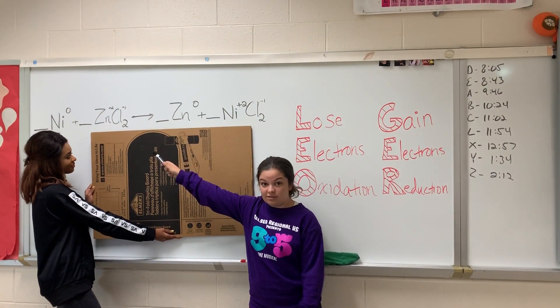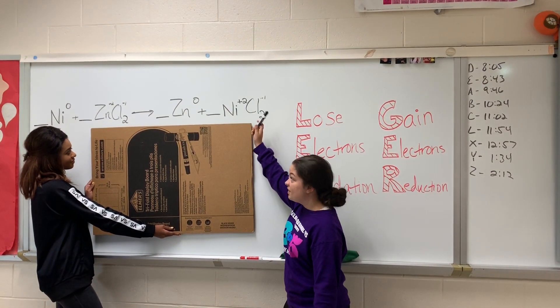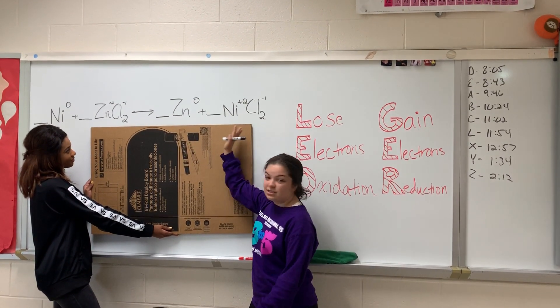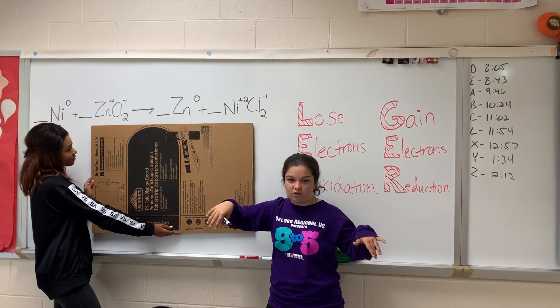Nickel starts out as zero but ends up as plus two. Zinc starts out as plus two and then ends at zero, and chlorine stays minus one on both sides so we don't even have to worry about it.